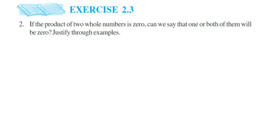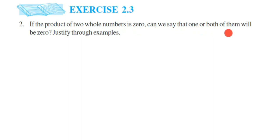Hey everyone, this is a question from Exercise 2.3, the second question. The chapter is Whole Numbers. The question is: if the product of two whole numbers is zero, can we say that one or both of them will be zero? Justify through examples. They have given two statements and are asking us to justify them.